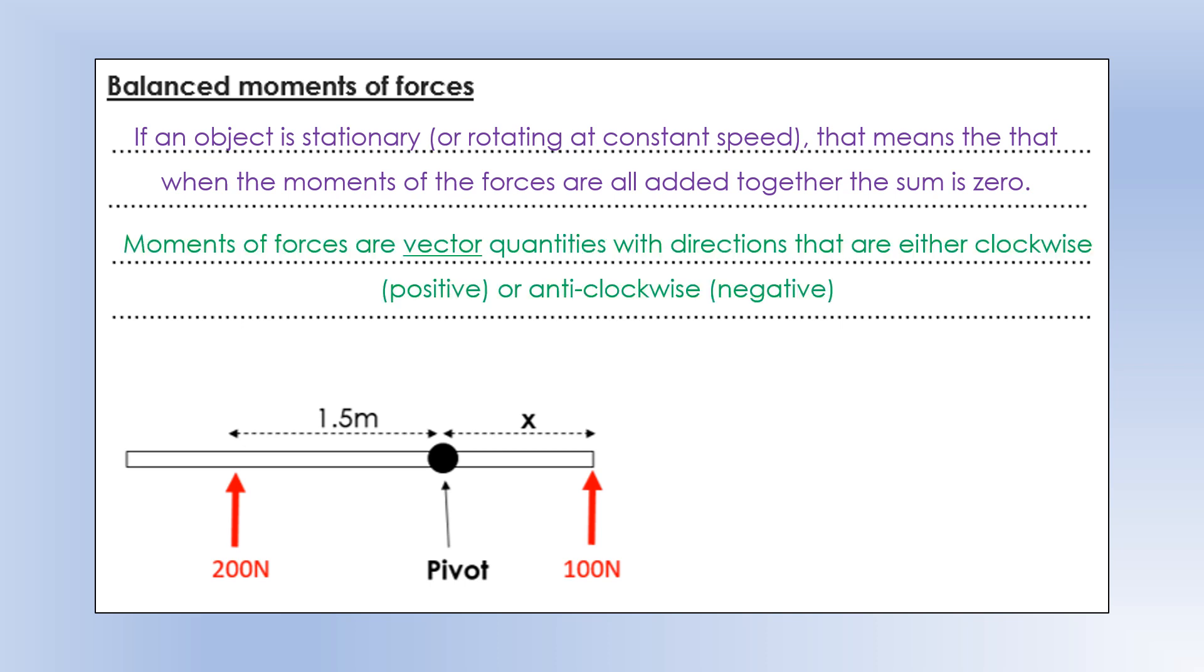So in this situation, it's important to realize that actually moments are vector quantities. So they have direction as well as magnitude, and most of the time their direction will be either clockwise, which we usually give a positive number to, or anticlockwise, which we give a negative moment.